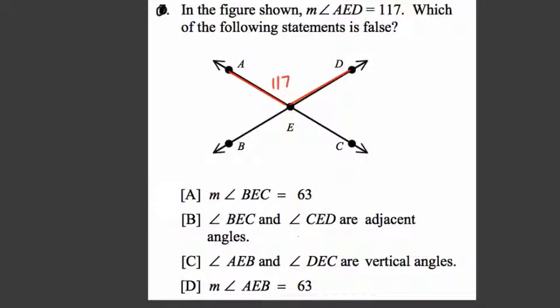The measure of BEC, that's this angle right here, is 63 degrees. Well, that's false, and we found it right away, because here this angle is a vertical angle to AED. They're equal to each other. It cannot equal 63. It must be 117.